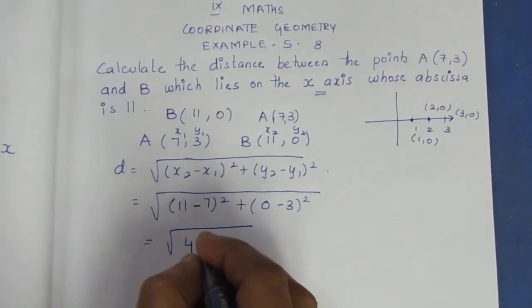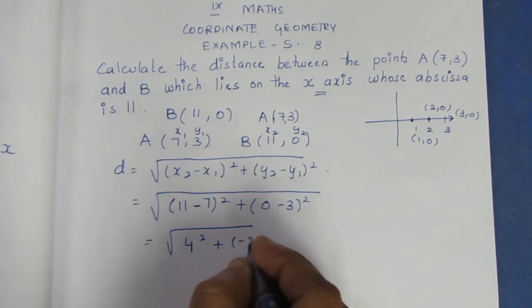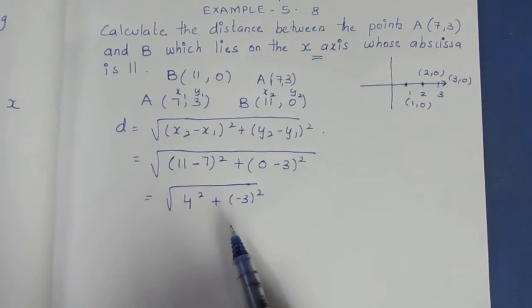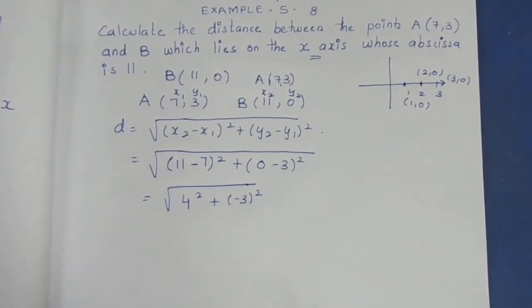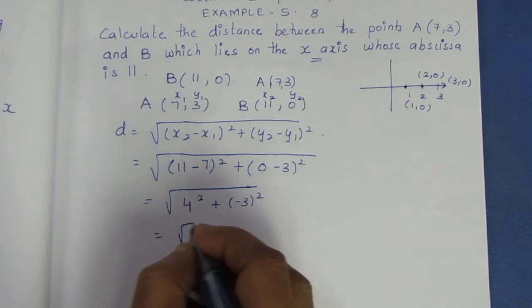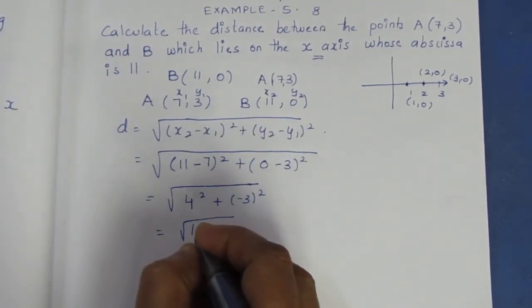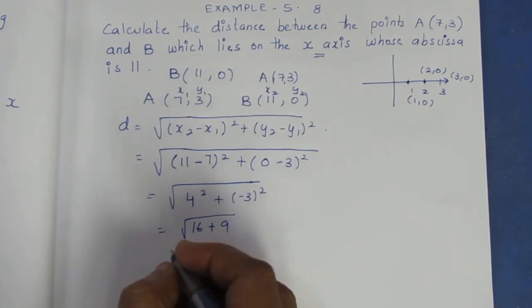11 minus 7 is 4 square, plus 0 minus 3 is minus 3 whole square. If you have minus, it's not a problem because it's squared. So, 4 square is 16 plus 9. It is root 25.